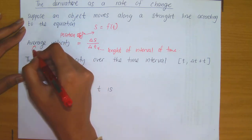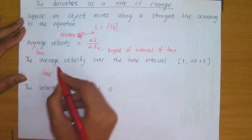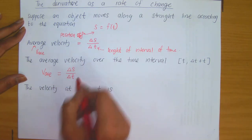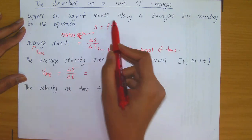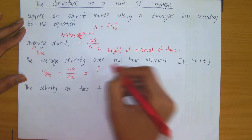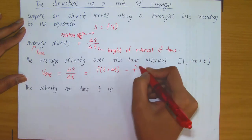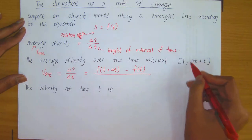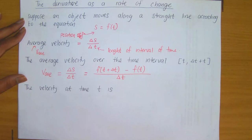Average velocity is often denoted by V subscript AVE. The average velocity equals the change in S, which is displacement, over the change in T. The change in S is given by the position function f of T, so this equals f evaluated at the upper bound T plus delta T, minus f evaluated at the lower bound T, divided by the change in T, which is T plus delta T minus T, giving us delta T.